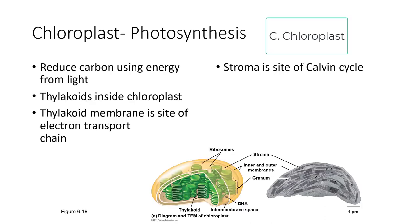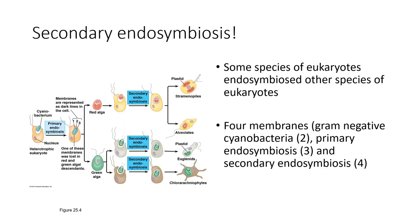Chloroplasts are where photosynthesis takes place — this is where carbon is reduced using energy from light. There are thylakoid membranes; the inner convolutions of the membrane are the thylakoid. The thylakoid membrane is the site of the electron transport chain. You can also see DNA in there, and the stroma is the site of the Calvin cycle.